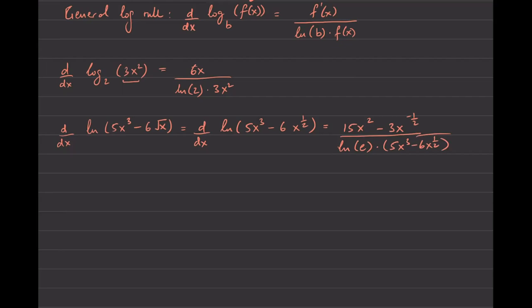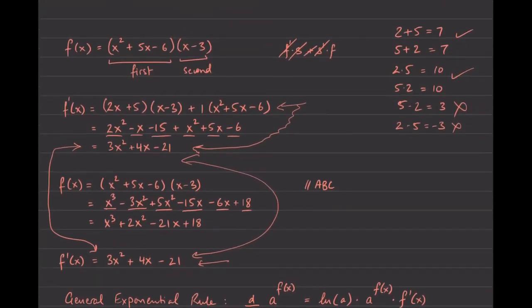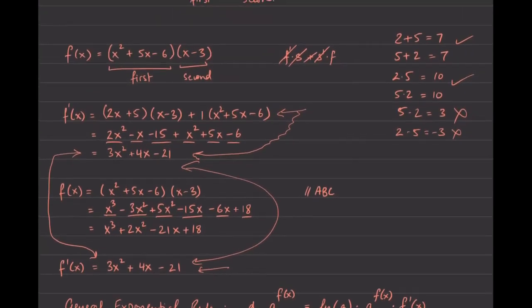Two more very important small details: the derivative of sine x is cosine x, and the derivative of cosine x is negative sine x. These are all the derivative rules for this particular unit and test. In the future we'll have more rules: implicit differentiation, logarithmic differentiation, quotient rule, and chain rule — a bunch of different ways of doing these problems coming soon.